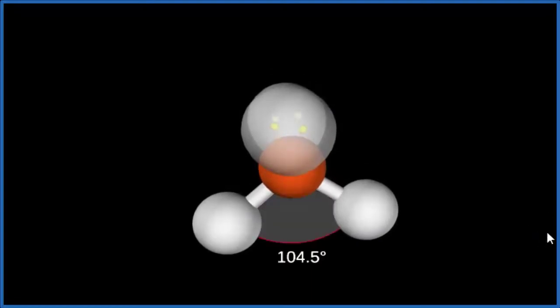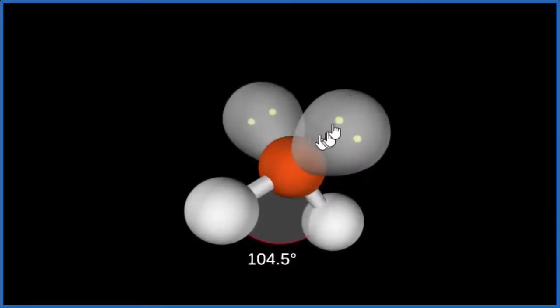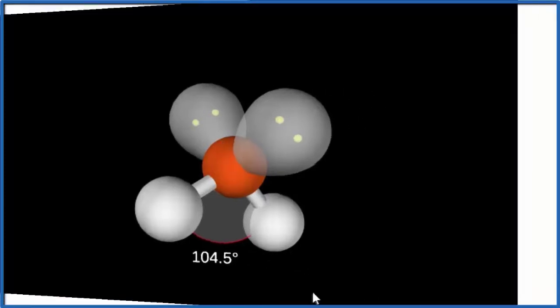That's different than what we saw on our generic table. And that's because of these lone pairs. They occupy more space, and they push the hydrogen atoms down. And instead of 109.5, we get this 104.5. That's the bond angle for this right here in the water molecule.